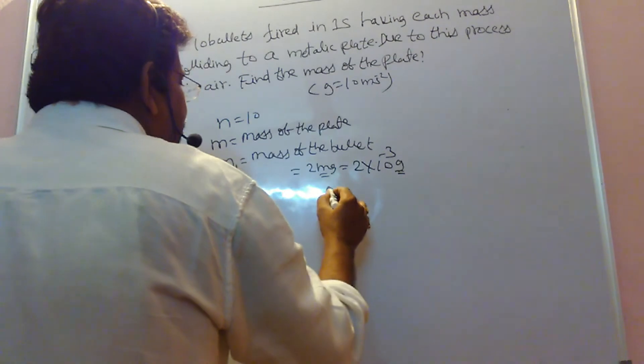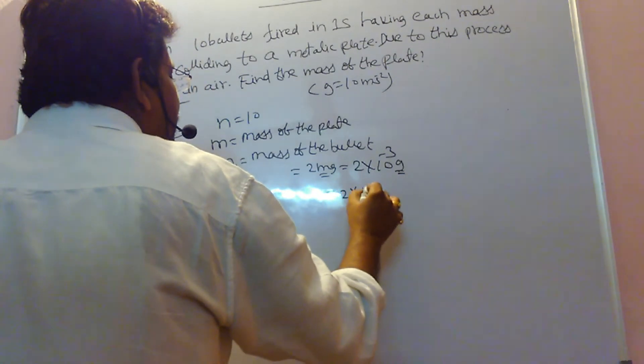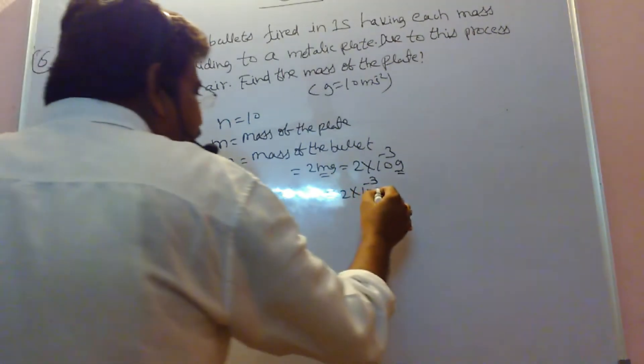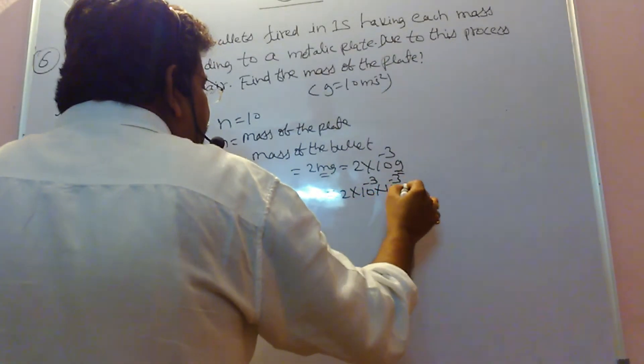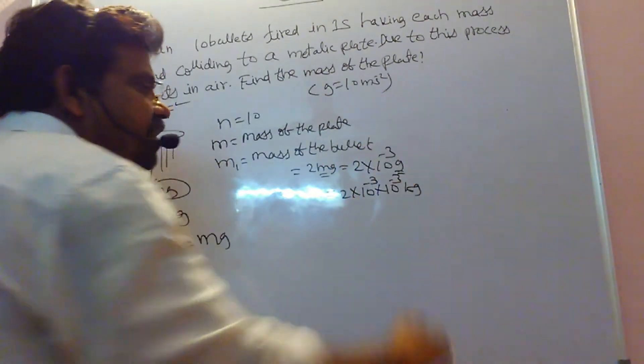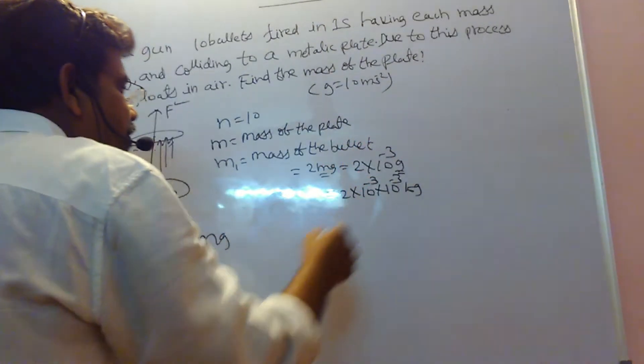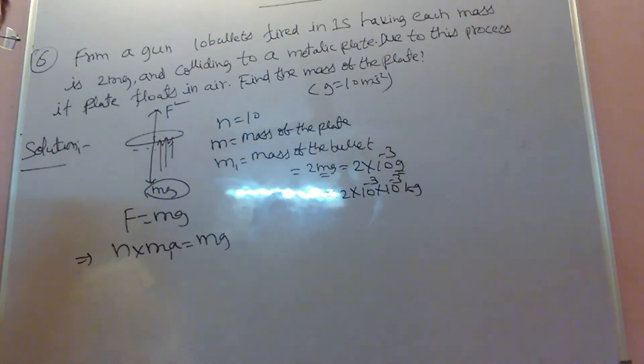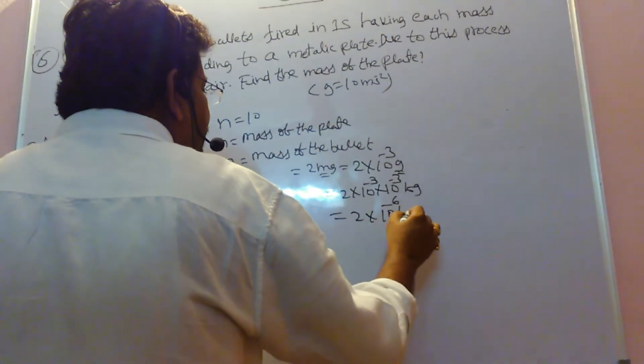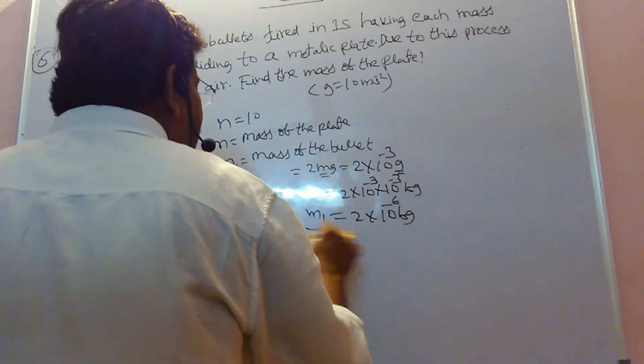Milli means 10 power minus 3, first convert into grams. So 2 into 10 power minus 3. Again, 1 kilogram equals 1000 grams, so again 10 power minus 3. Now totally converted into kilograms. Because all units must be in SI system. Finally, we have got 2 into 10 power minus 6 kilograms. This is the mass of each bullet.